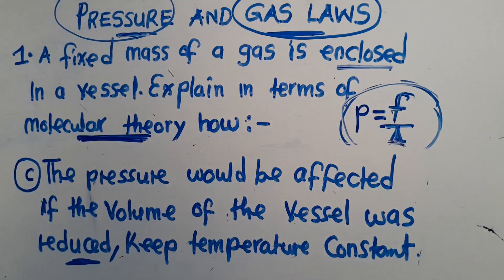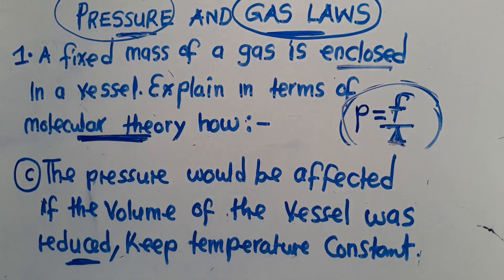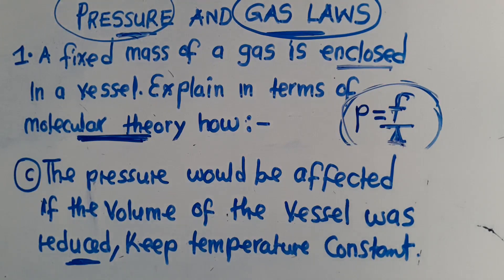More frequent collisions will cause the force on the walls to increase. Also note that a reduction in the volume of the vessel results in a reduction of its area. Therefore, an increase in force and a reduction in area will result in an increase in pressure exerted on the walls of the vessel. Reducing the volume at constant temperature means particles collide more frequently, and pressure is greatly affected.